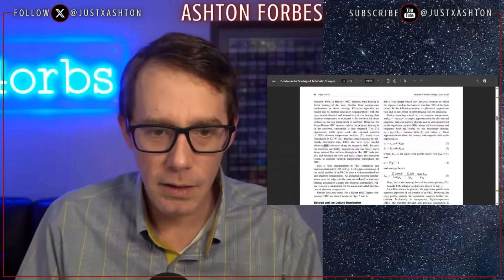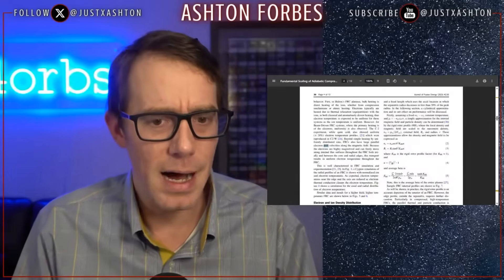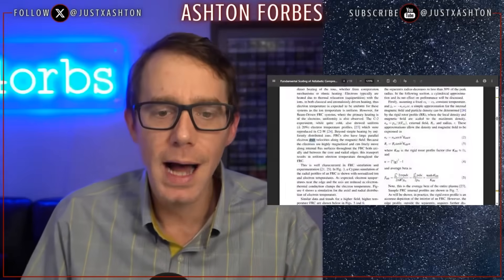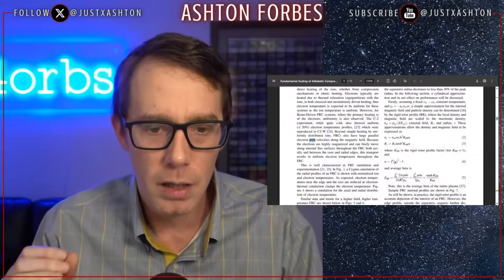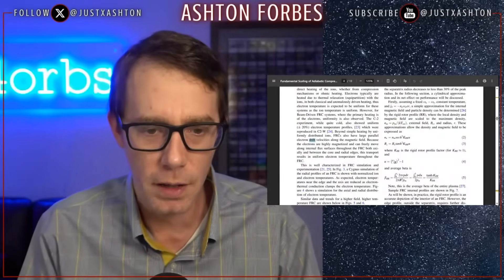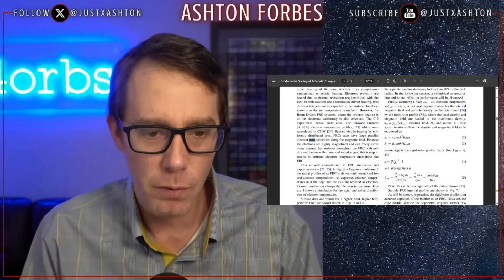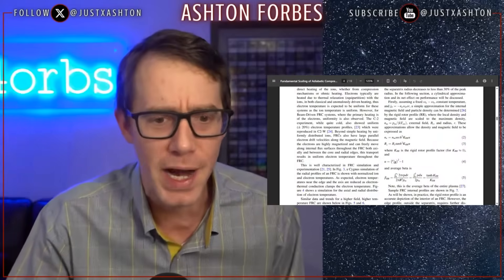On page four of David Kirkley's helium fusion scientific paper about neutronic fusion for commercial purposes, it states: 'Beyond simple heating by uniformly distributed ions, field reverse configurations also have large parallel electron drift velocities along the magnetic field because the electrons are highly magnetized and can freely move along internal flux surfaces throughout the FRC, both axially and between the core and radial edges. This transport results in uniform electron temperature throughout the FRC.'